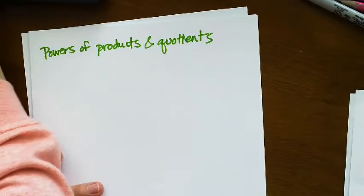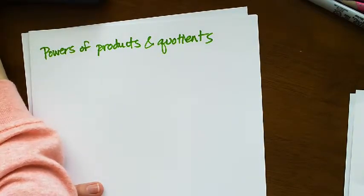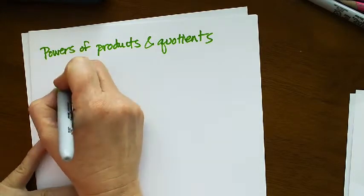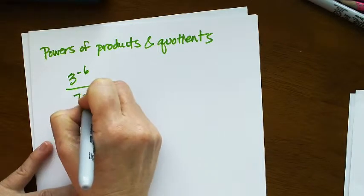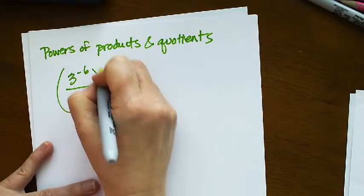This is to help you with powers of products and quotients. The first question that pops up for me is 3 to the negative 6 divided by 7 to the negative 3 raised to the 5th.